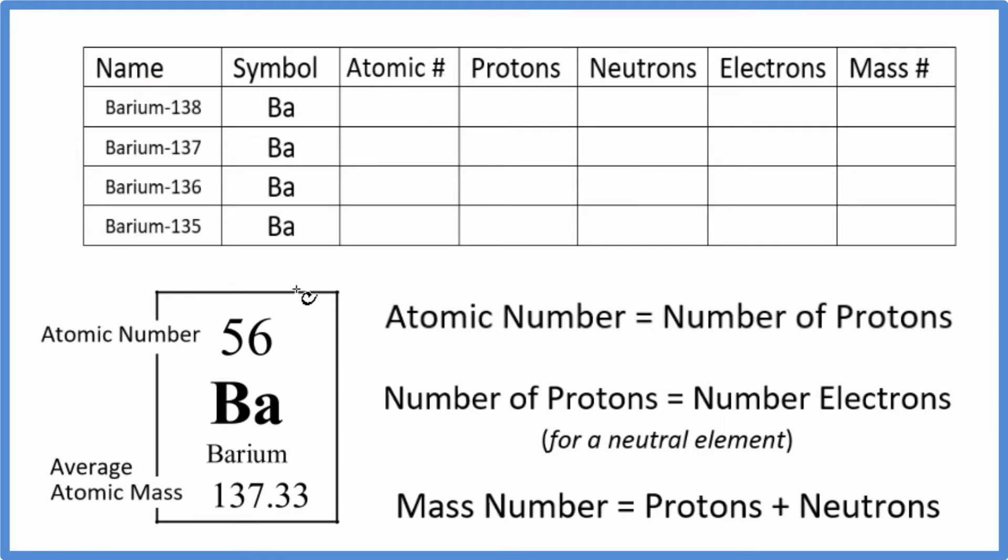First let's look at the atomic number. So the atomic number for barium right here on the periodic table is 56. And that's the same for all isotopes of barium. If the atomic number is 56 it's going to be barium. And if we know the atomic number we know the number of protons. So for all of these that's 56 as well.